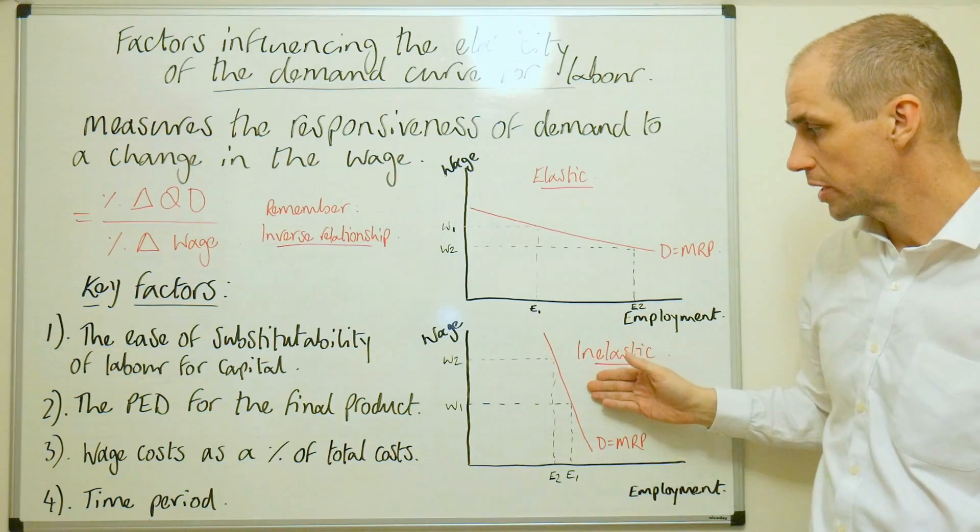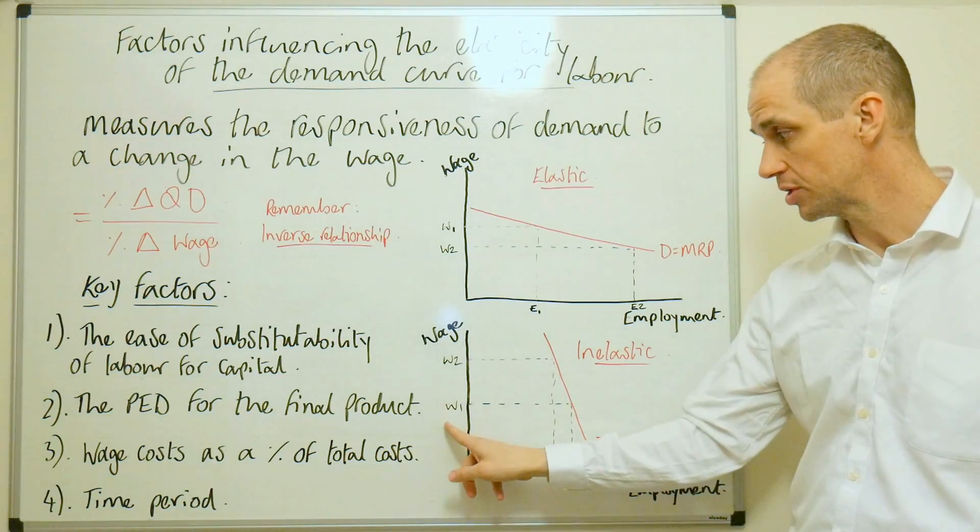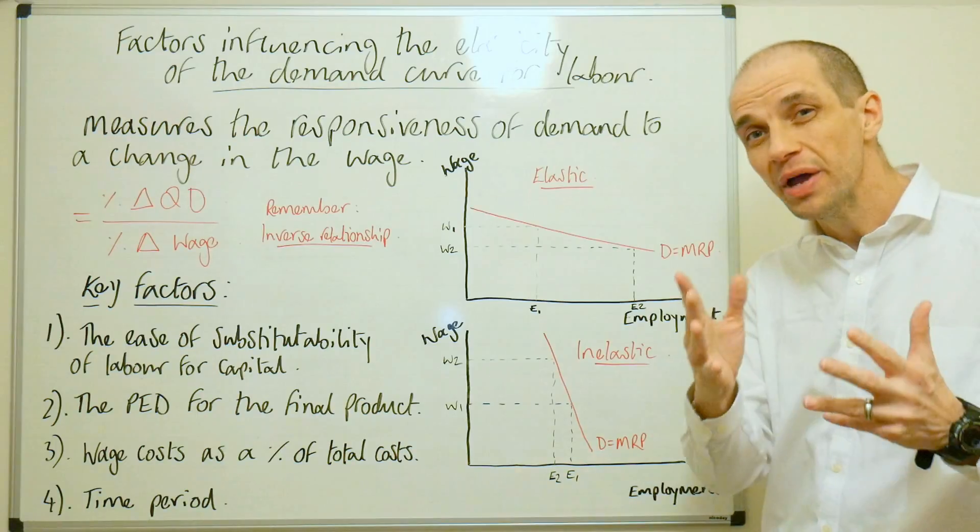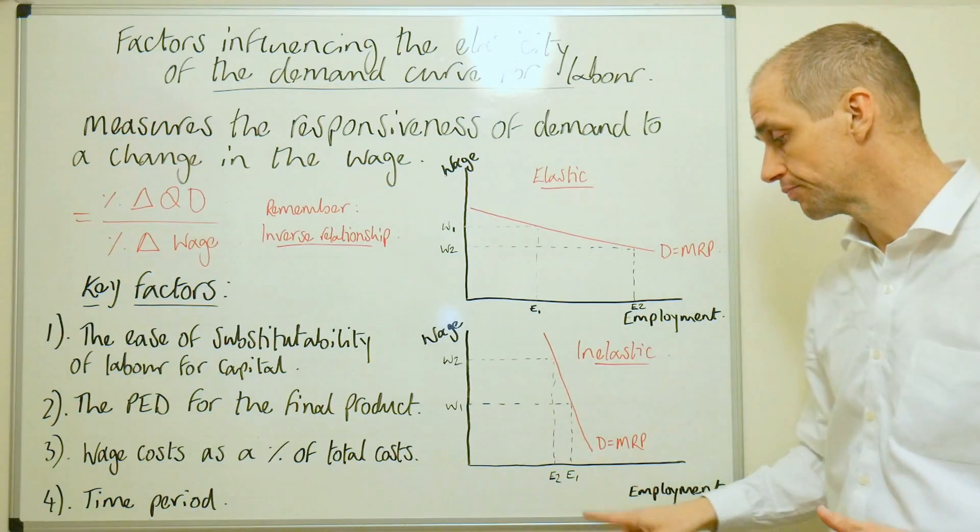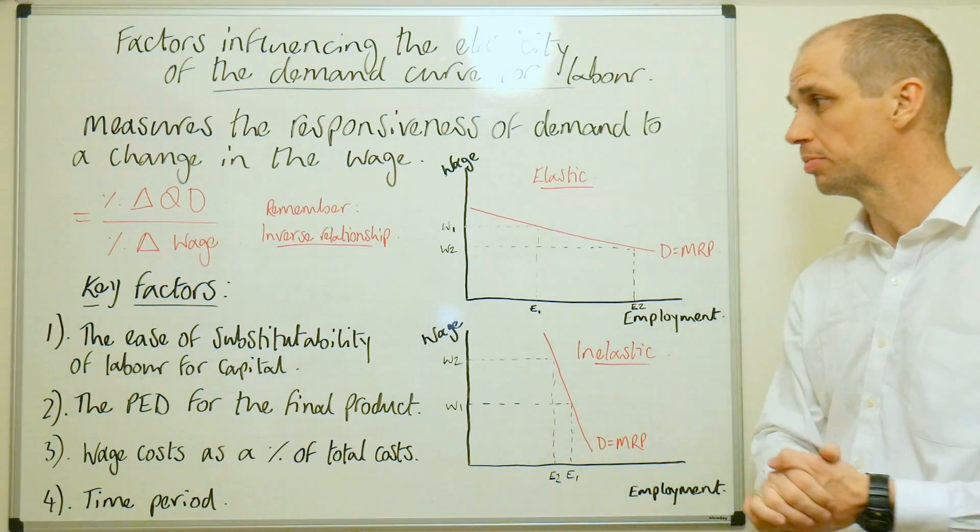In this instance, we can see that a big increase in the actual wage rate here from W1 to W2 would actually barely change the actual level of employment in the industry, from E1 to E2. So only a small tiny proportion there.